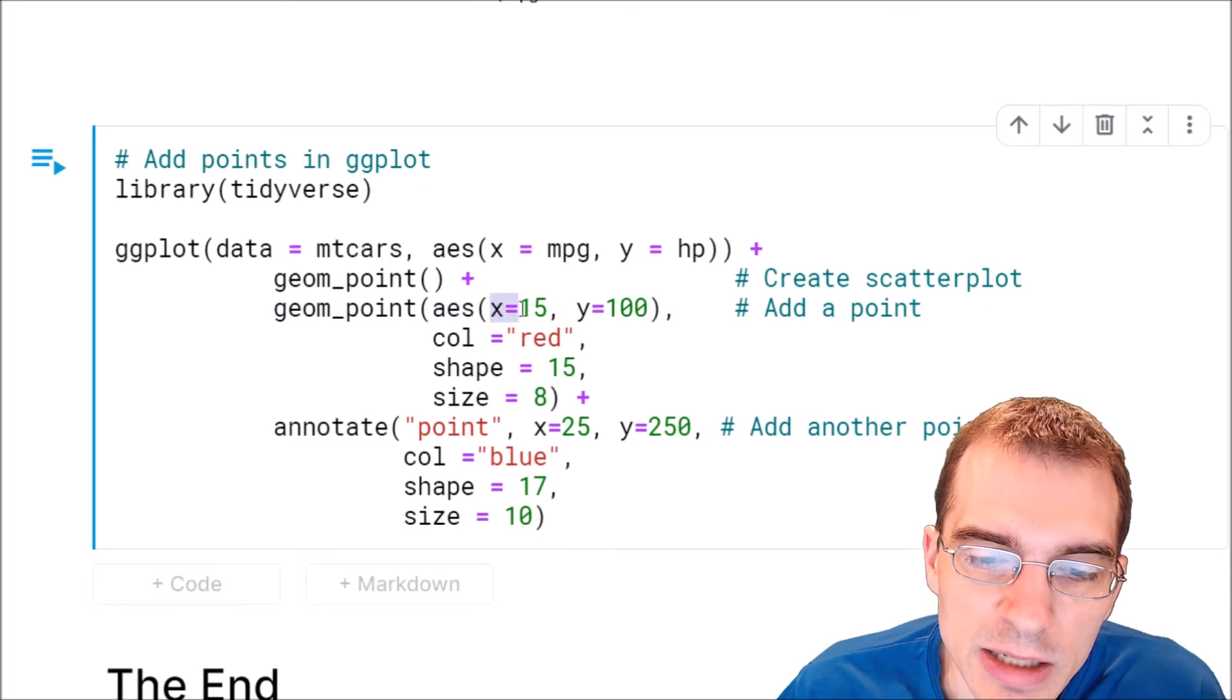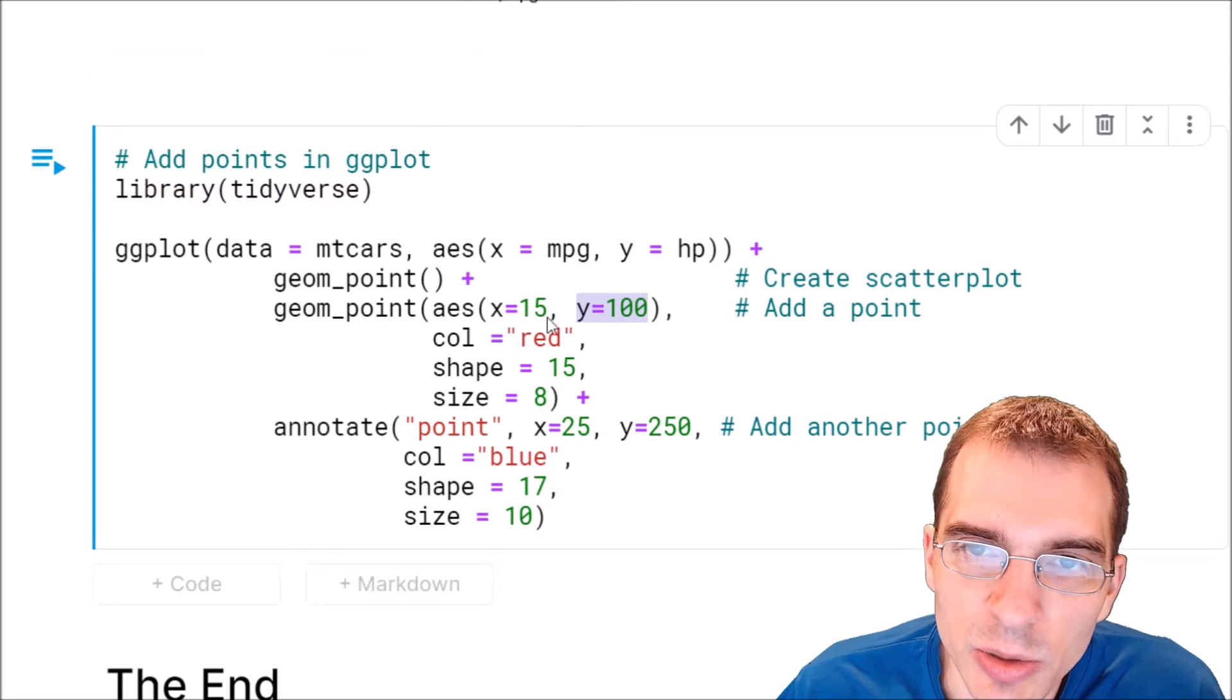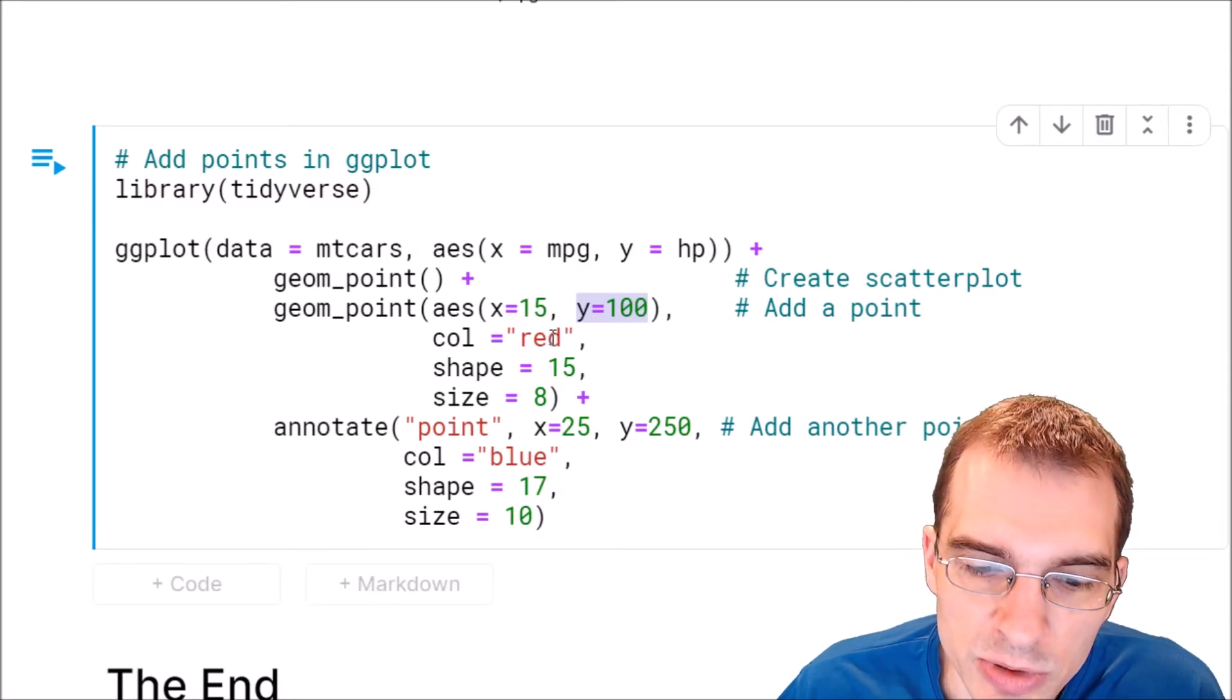In the aesthetic call X is going to be at 15, Y will be 100. So we're going to put a point at the exact same place as we did above. And then again we're going to color it, give it a shape and a size similar to above.